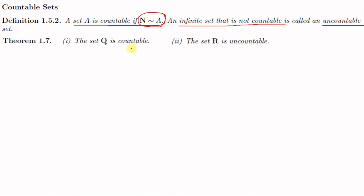We have a theorem here. The first part of the theorem is: the set Q of rational numbers is countable, and the set R of real numbers is uncountable. First we shall see the proof of the first part, that the set Q is countable.